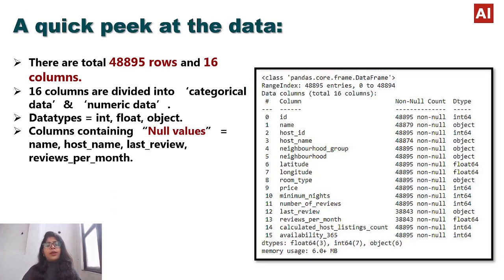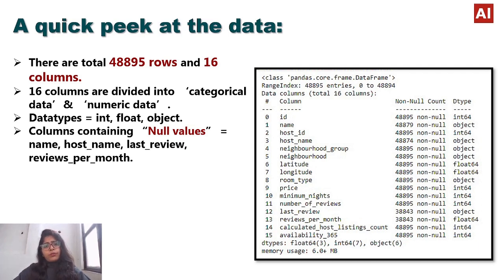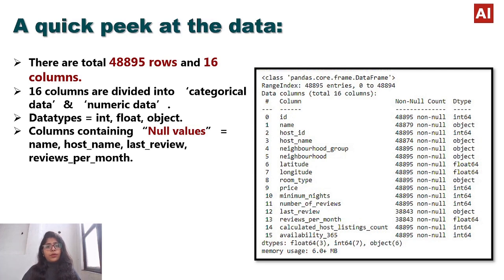Let's take a quick peek at the data. Our dataset has a total of 48,895 rows and 16 columns. The 16 columns are divided into two parts: categorical data, which is string type, and numerical data. The data types of these attributes are int, float, and object. We can clearly see that the columns containing null values are name, host name, last review, and reviews per month.